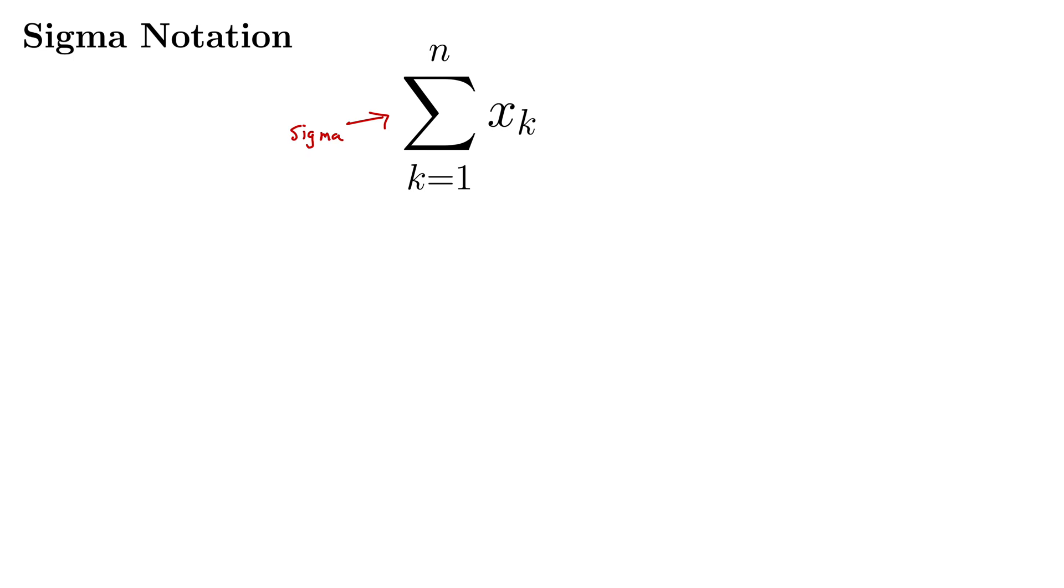In this case we have the sum and we'd say k equals 1 to n of x sub k. So this k is the index. It's often also written as i or j, so i, j, k are the indexes that we commonly see. The equals 1 part tells us where we start. In this particular sum we're starting at 1 and the n tells us where to stop.